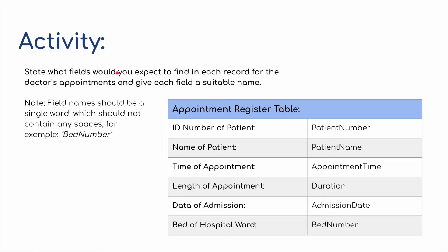Here's a little activity, loosely taken from a textbook example: state what fields you would expect to find in each record for doctor's appointments, and give each field a suitable name. For a doctor's appointment register table, we might have the patient ID number, the patient's name, the time of the appointment, the duration of the appointment, the date the person was admitted to hospital, and the bed number of where they are on the ward. Field names should be a single word so they're easy to identify in the database.